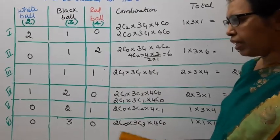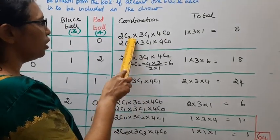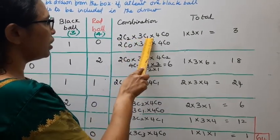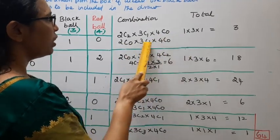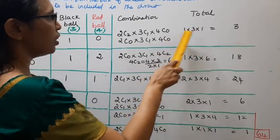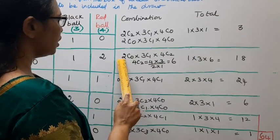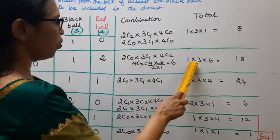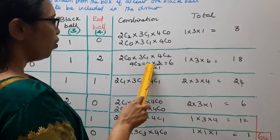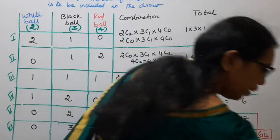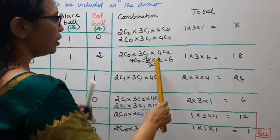Now, 2C2×3C1×4C0 equals 1×3×1 equals 3. Next, 2C0×3C1×4C2 equals 1×3×6 equals 18. Then 2C1×3C1×4C1 equals 2×3×4 equals 24.